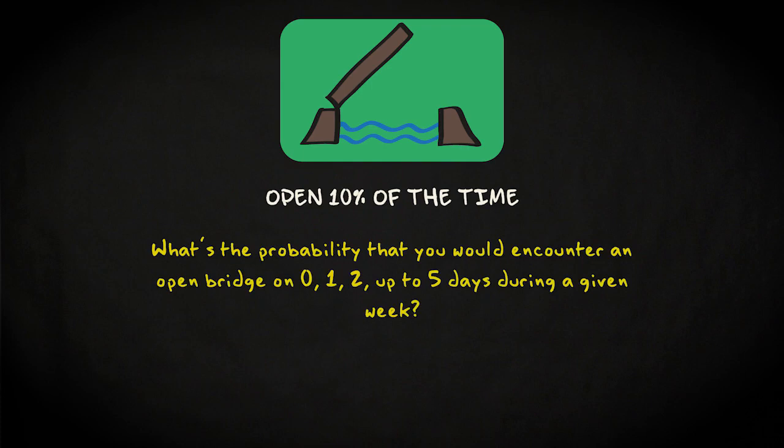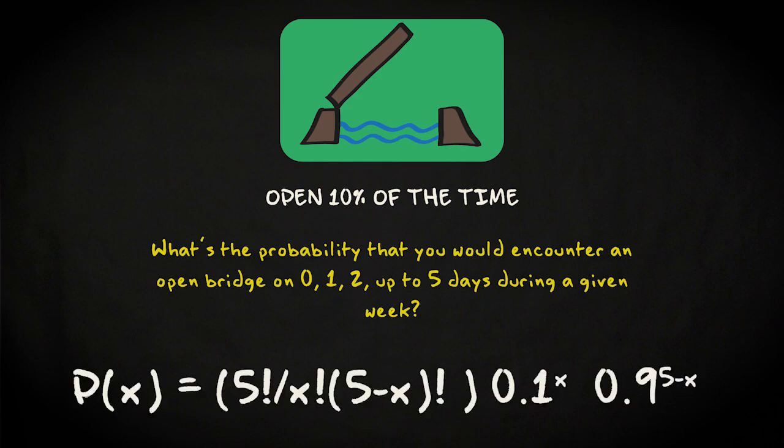What's then the probability that you would encounter an open bridge on 0, 1, 2, up to 5 days during a given week? Your experiment has 5 trials and you have a probability of 0.1 to encounter an open bridge. So, the binomial distribution in this case is this, with x the number of times you encounter an open bridge.